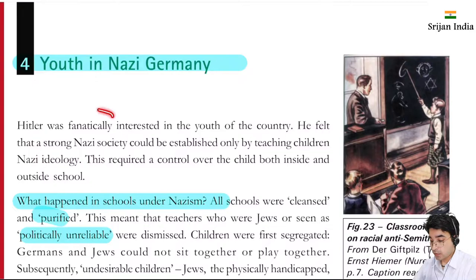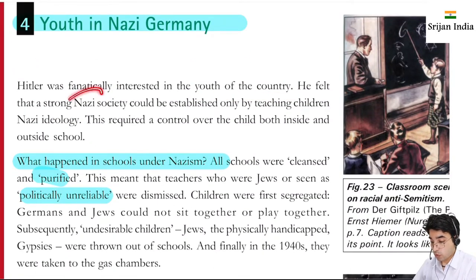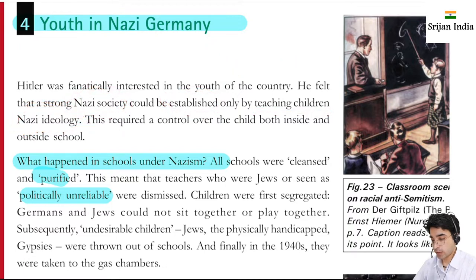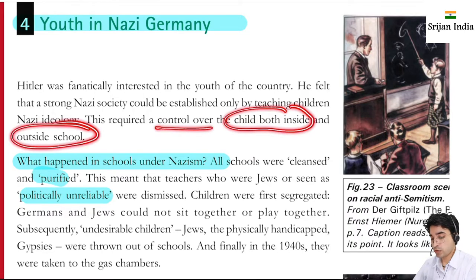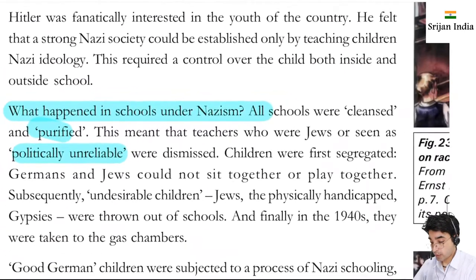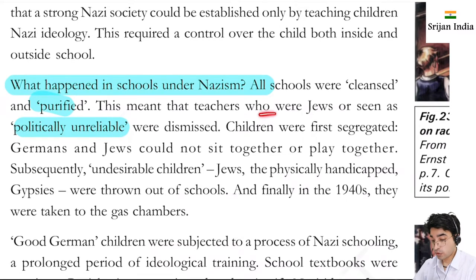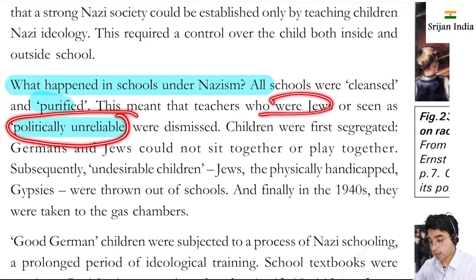Hitler was fanatically interested in the youth of the country. He felt that a strong Nazi society could be established only by teaching children Nazi ideology. So what happened in schools under Nazism? All schools were cleansed and purified. This meant that teachers who were Jews or seen as politically unreliable were removed. Again, Nazism had arrived here too.